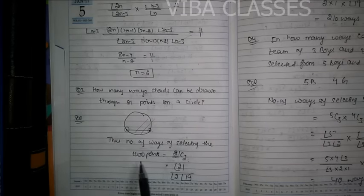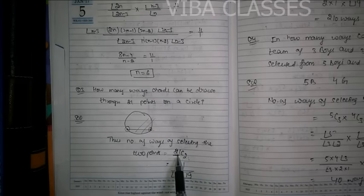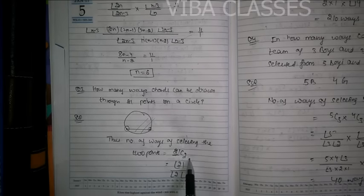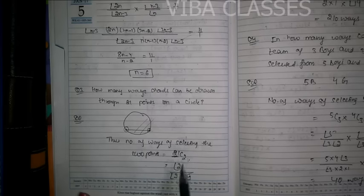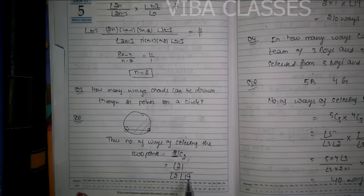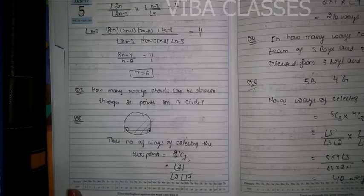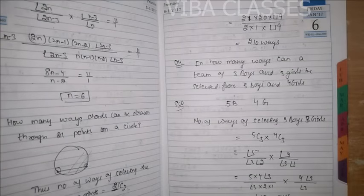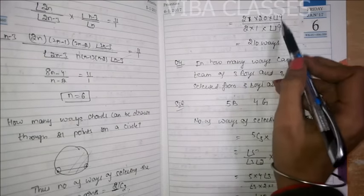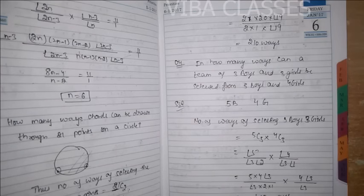The number of ways of selecting two points out of 21 is 21C2. N is 21 and R is 2. Applying the factorial formula: factorial 21 divided by factorial 2 into factorial 19. You open 21 as 21 into 20, then factorial 19 cancels with factorial 19 in the denominator. Factorial 2 is 2 into 1. So you get 21 into 20 divided by 2, which gives 210. So 210 chords can be made from 21 points.